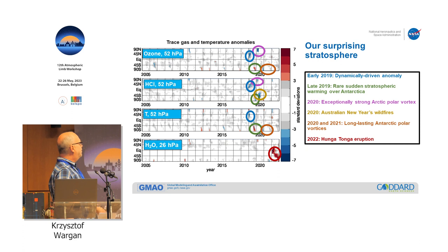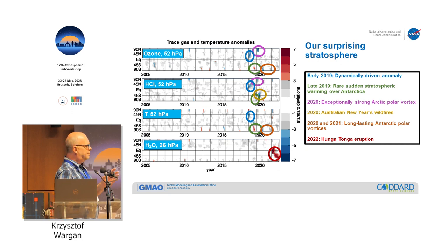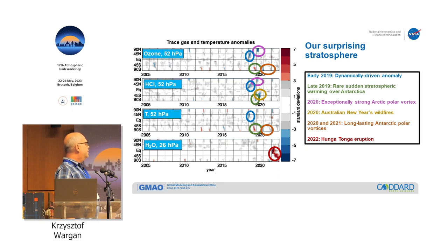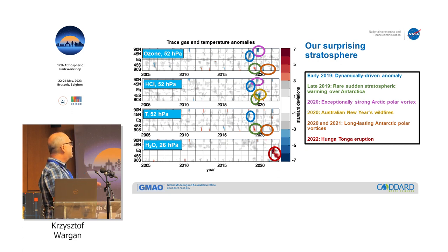What this is highlighting — the ones in color are greater than three standard deviations from the mean — is that in the recent period we have a fair number of extreme events: from dynamically driven anomalies to the SSW in the southern hemisphere in 2019, then extremely deep or long-lasting ozone holes in 2020 and 2021, and the Hunga Tonga eruption showing this enormous amount of water vapor. So whoever says stratospheric science is done is simply wrong.